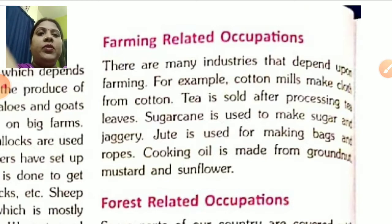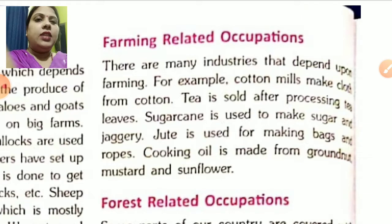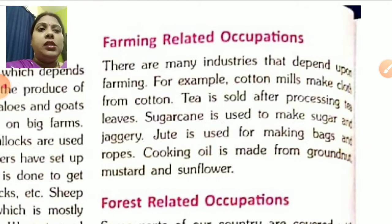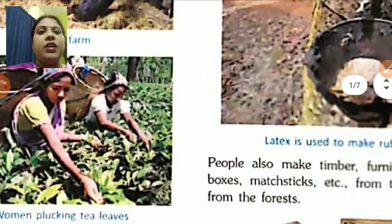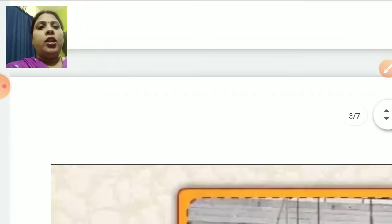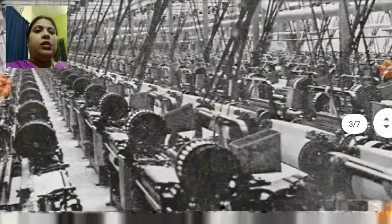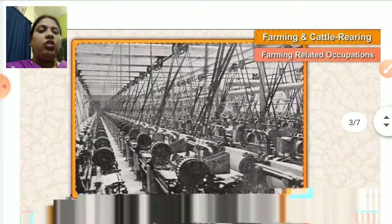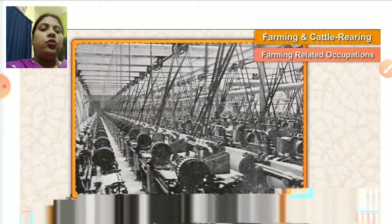Let's start the class. There are many industries in our country that depend upon farming. For example, cotton mills make cloth from cotton. As you can see in the picture, this is a cotton mill where cotton cloths are prepared using cotton.